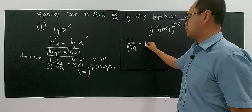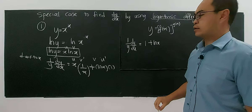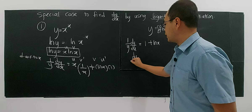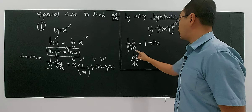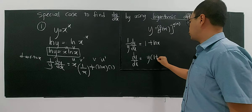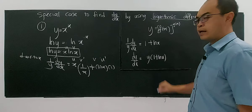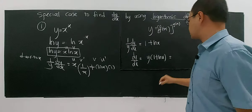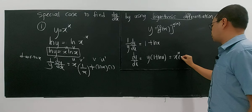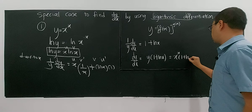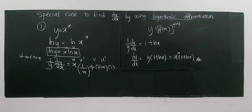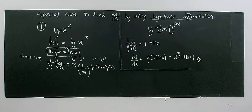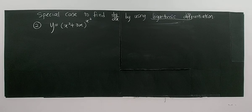Differentiating with respect to x: for ln y, I will have (1/y)(dy/dx). For the right-hand side, you have a product u·v. So you write u·v prime — differentiate ln x, you get 1/x — plus v·u prime, where v is ln x and u prime is the derivative of x, which gives 1.